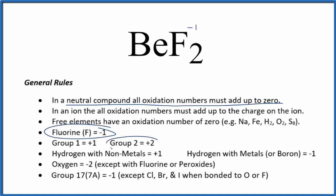Beryllium, on the periodic table, is in group two. So beryllium will be two plus.